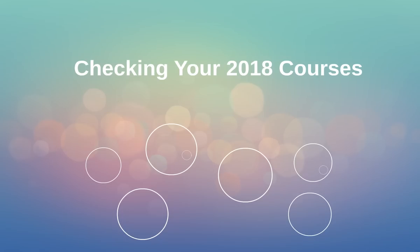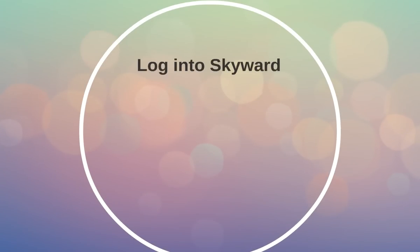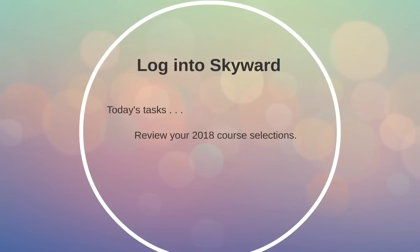Hi everybody, this is Dr. Harvey, and today I'm going to walk you through how to check your 2018 course requests. The first thing you need to do is log into Skyward, and there will be two tasks that you'll need to complete: review your 2018 course selections, and then complete the course confirmation form, also in Skyward.